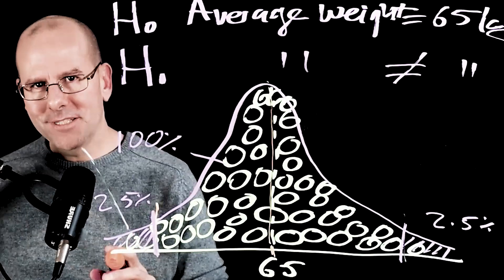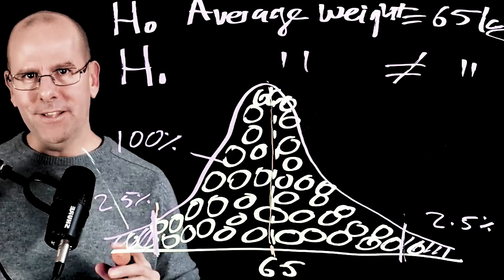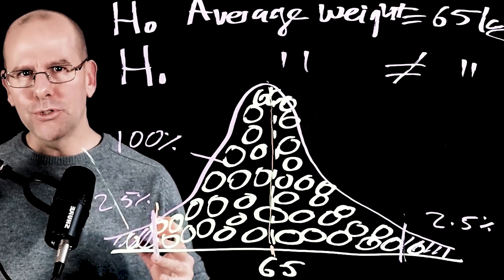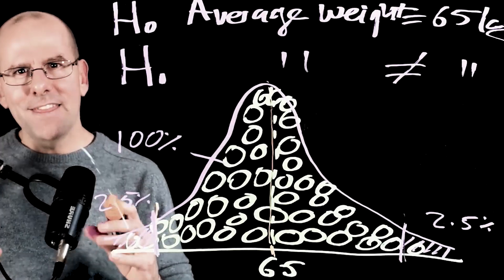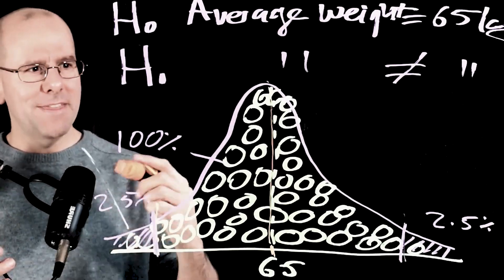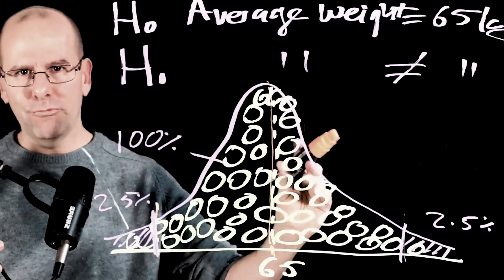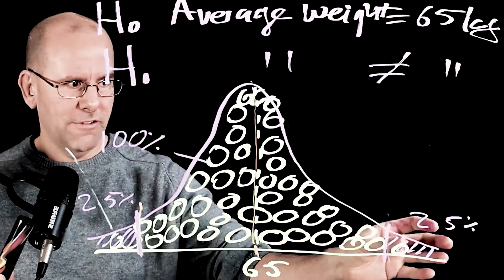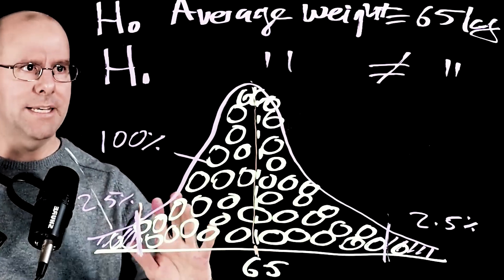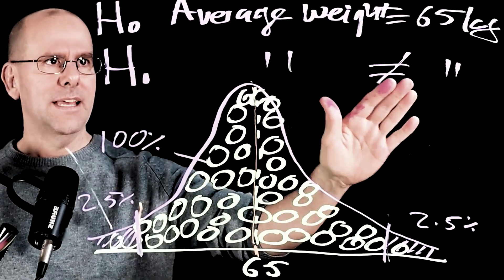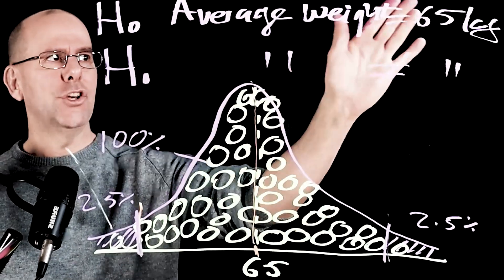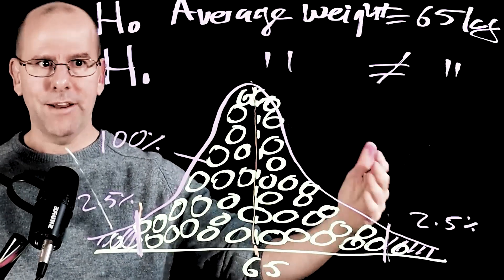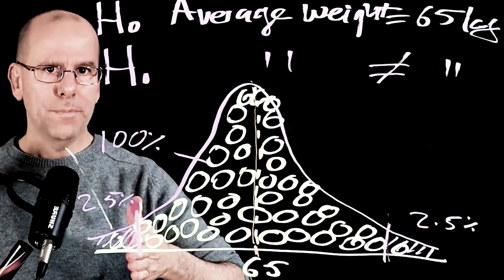And incidentally, we would decide even before taking our sample what the significance level is. In other words, what is the line in the sand? What is the threshold beyond which we consider the sample to be so unlikely that we have no confidence that this is in fact the distribution that represents the population? In this case, we've chosen a threshold of 5%, in other words, 2.5% in each tail. Because remember here, our alternative hypothesis is that the average weight is simply not 65. It could be in either direction. The actual population average weight may be above or below 65.